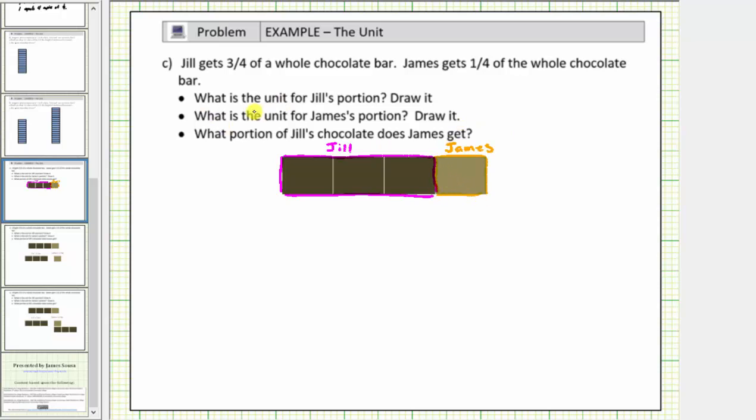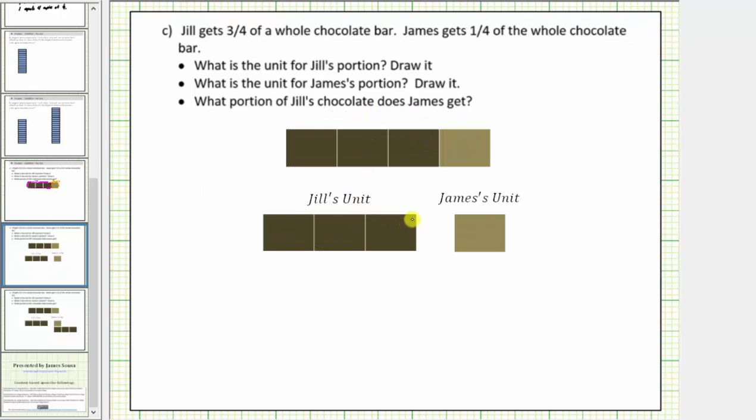The next question is, what is the unit of Jill's portion, draw it, and what is the unit of James's portion, draw it? The unit of Jill's portion is the amount of chocolate she receives or gets, and the unit of James's portion is the amount of chocolate that he gets or receives, which means Jill's unit would be this amount of chocolate, and James's unit would be this amount of chocolate.